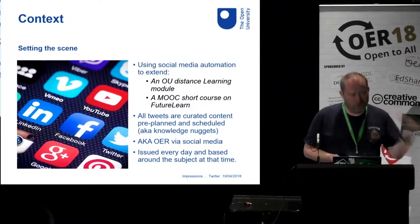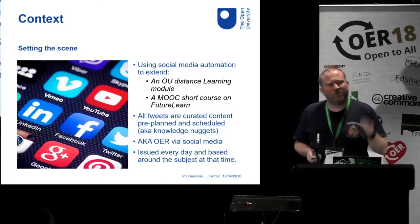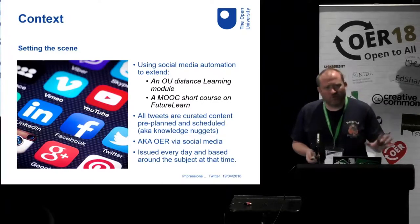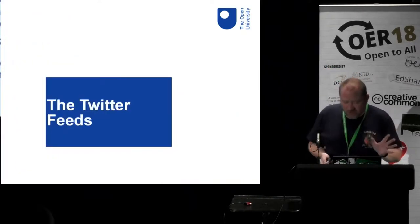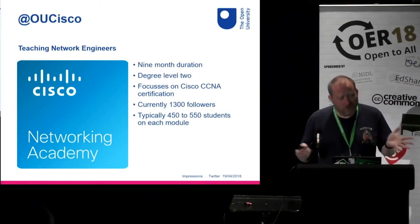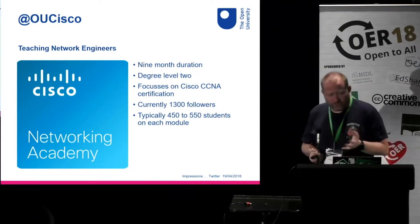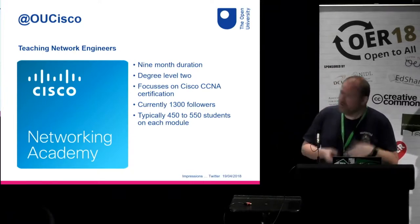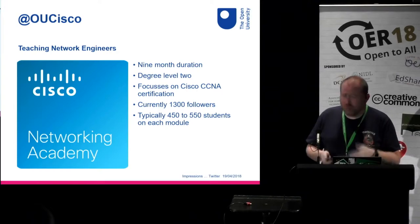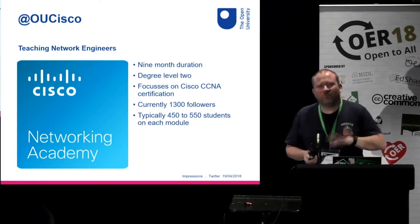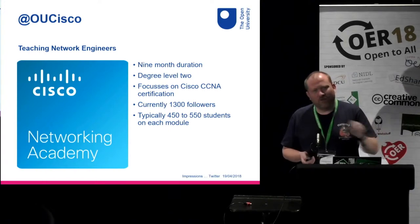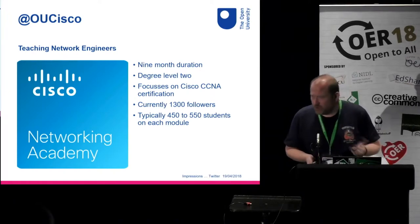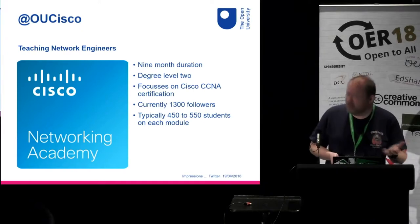We push it out every day at particular times, trying to reach students or participants when they're likely to look at it. So it's an action research process — constantly experimenting, constantly looking at the best times. The first Twitter feed I'm dealing with is my OU Cisco Twitter feed. This runs over a nine-month duration, because that's the norm for Open University modules. It's degree level two, teaches Cisco network engineering, and we currently have around 1,300 followers. What we find is we get greater impact and engagement from the followership, because they choose to follow based on it being related to their studies.